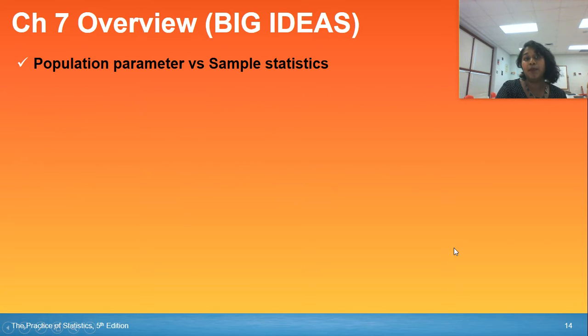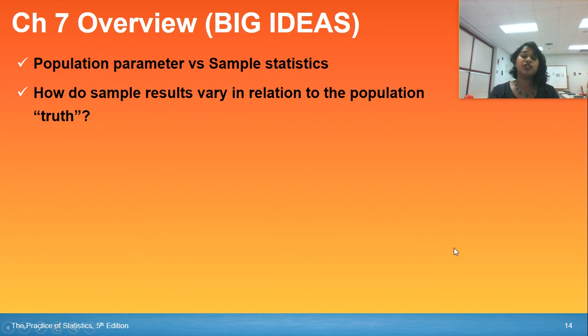So some big ideas we should have picked up on from Chapter 7 in general: We should have known P means population, means parameter. S means sample, means statistics. We should also be able to ask ourselves this question: How do sample results vary in relation to the population truth? And why is truth in quotations? Because we can negate that claim.